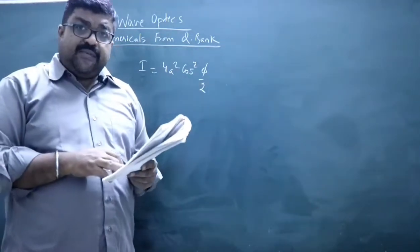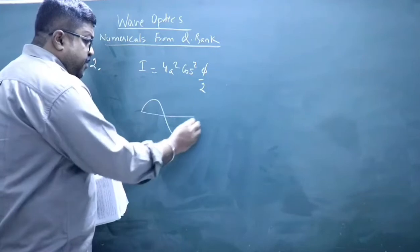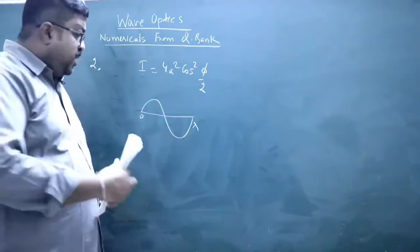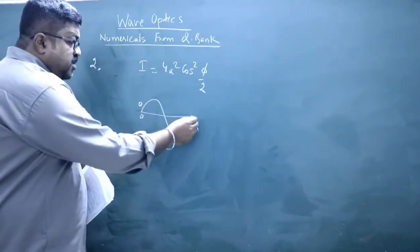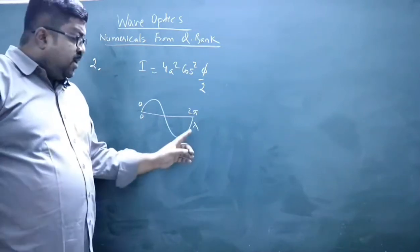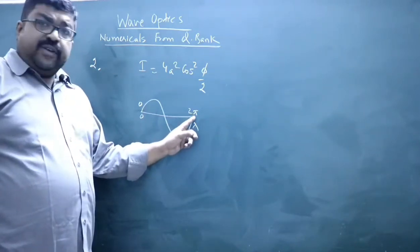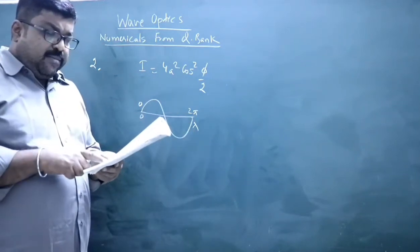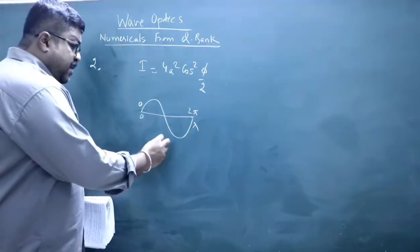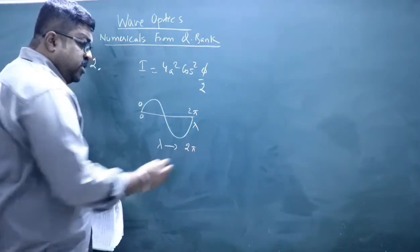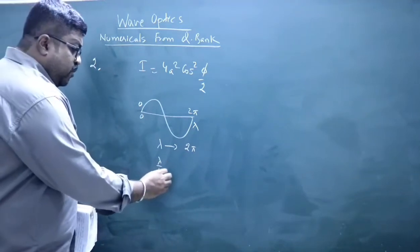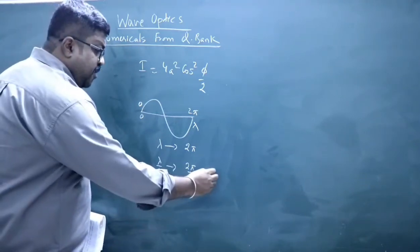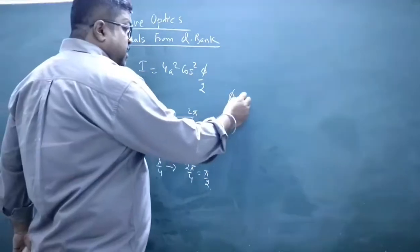In this question, path difference is given. A path difference of λ corresponds to a phase difference of 2π. So a path difference of λ/4 corresponds to a phase difference of 2π/4 = π/2. Therefore, φ = π/2.